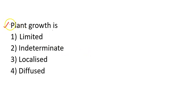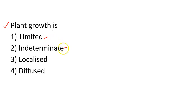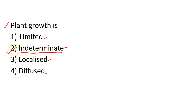We are going to start with biology. The question is: plant growth is — this is a sentence from NCERT. There are four options: limited, indeterminate, localized, and diffused. The answer is indeterminate — Option 2.